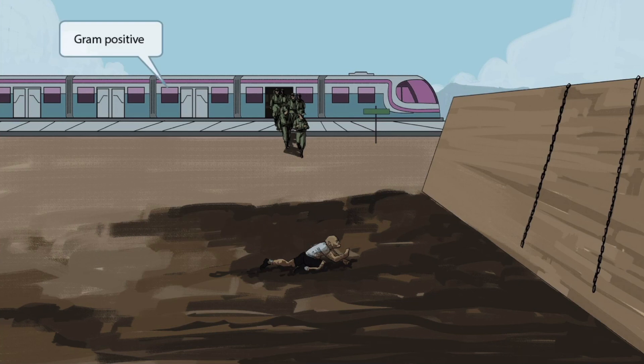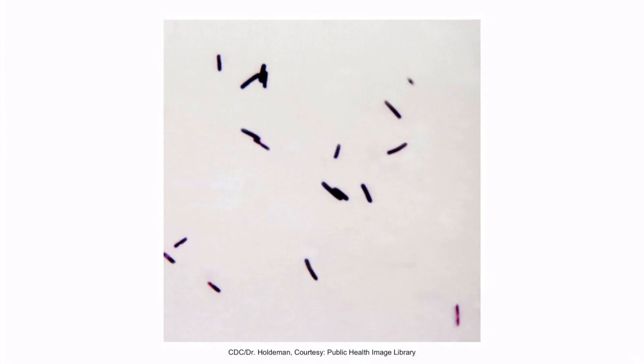Pay close attention to the sky and the train. Notice all of the blue and purple colors? Just like in other videos, we've colored the image this way to help you remember that this is a gram-positive organism. This is a gram stain of C. diff — notice that it appears purple under the microscope, and it's rod-shaped. So, C. diff is a gram-positive bacillus.